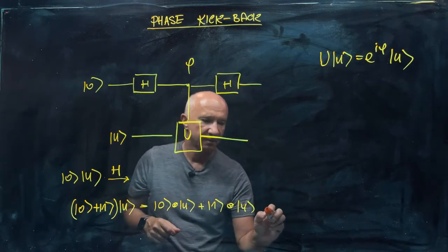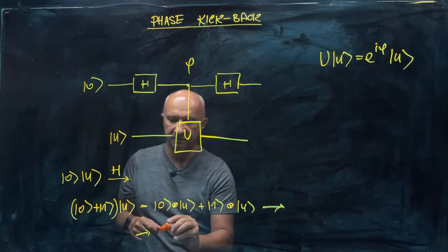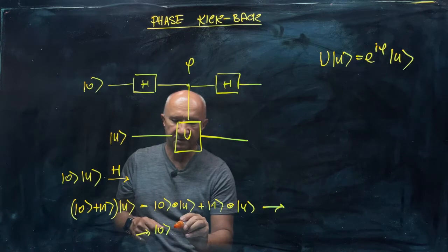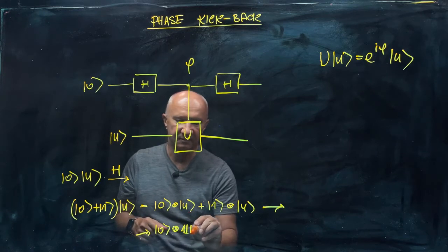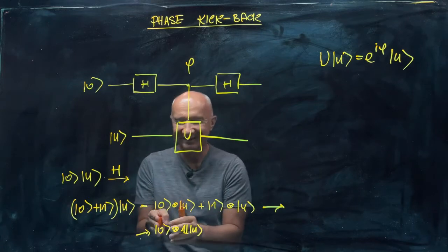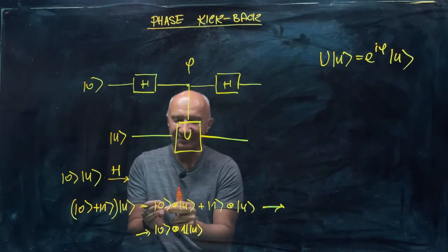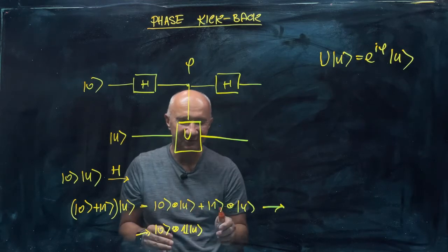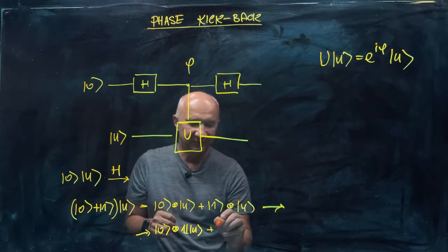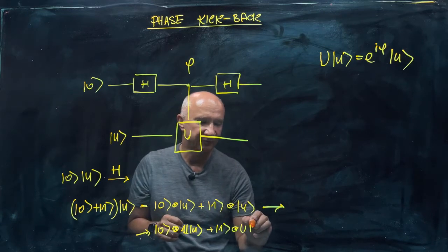The controlled U operation. You can see that the control U will take us to zero tensor identity to U. Sounds weird, right? Identity to U. We apply the identity to the state vector simply because the control, the top qubit is in state zero plus one tensor and we apply unitary U to U.